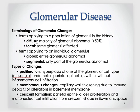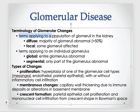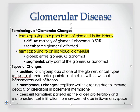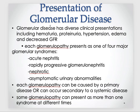To summarize the terminology: 'diffuse' and 'focal' are terms applied to the population of glomeruli in the kidney, while 'global' and 'segmental' are terms applied to an individual glomerulus. We also have the concepts of proliferation, membranous changes, and crescent formation. Now let's discuss the clinical presentation of glomerular disease — what we see clinically or on labs whenever the glomerulus gets damaged.